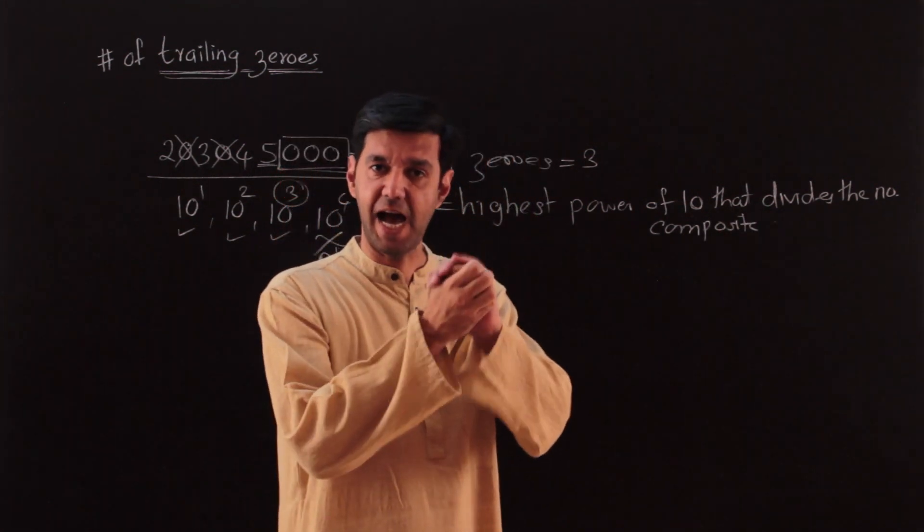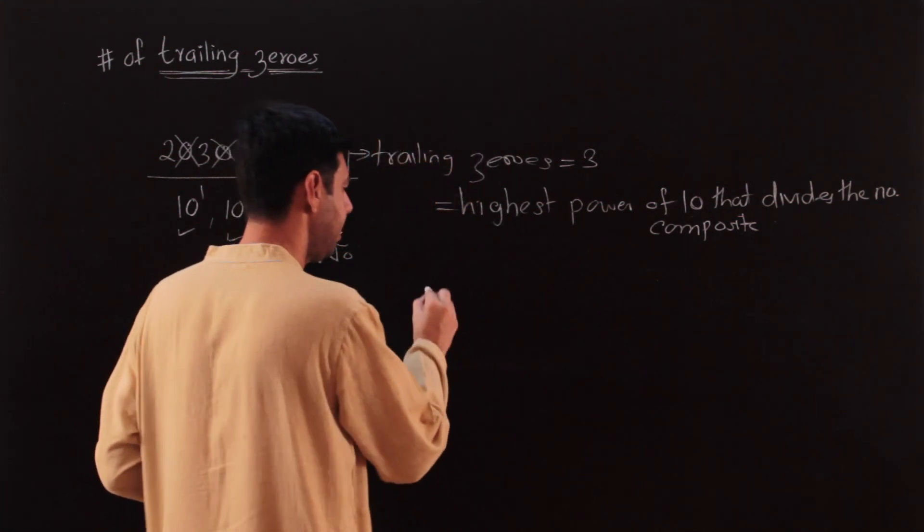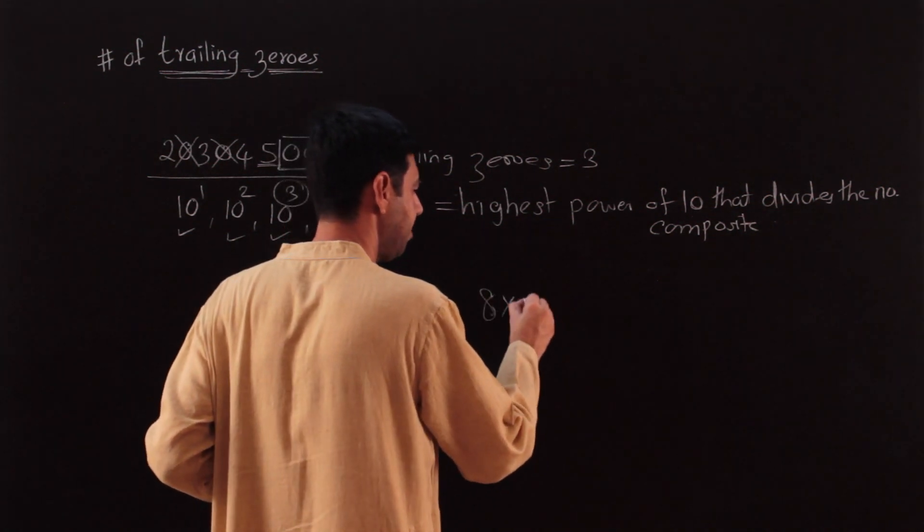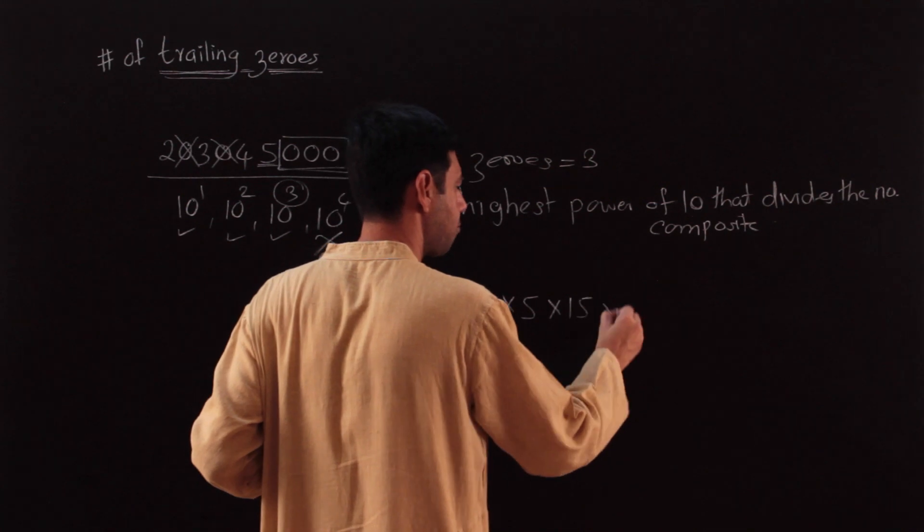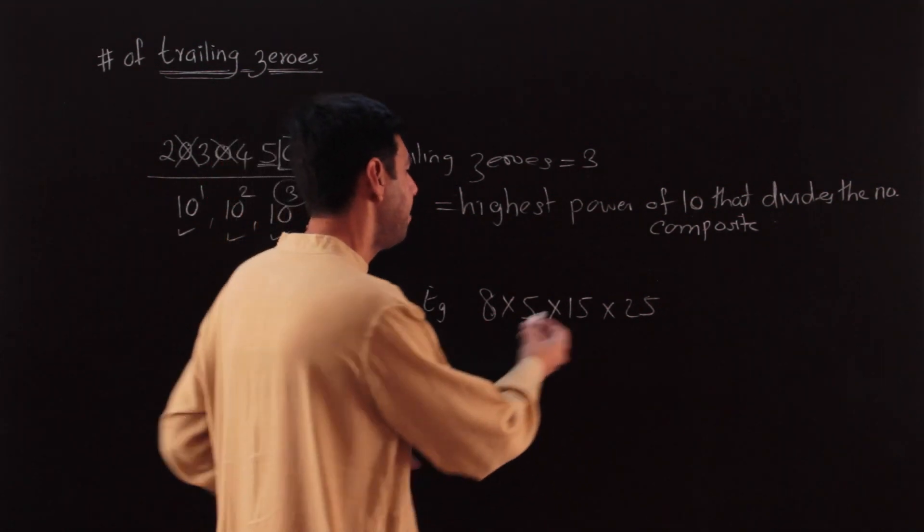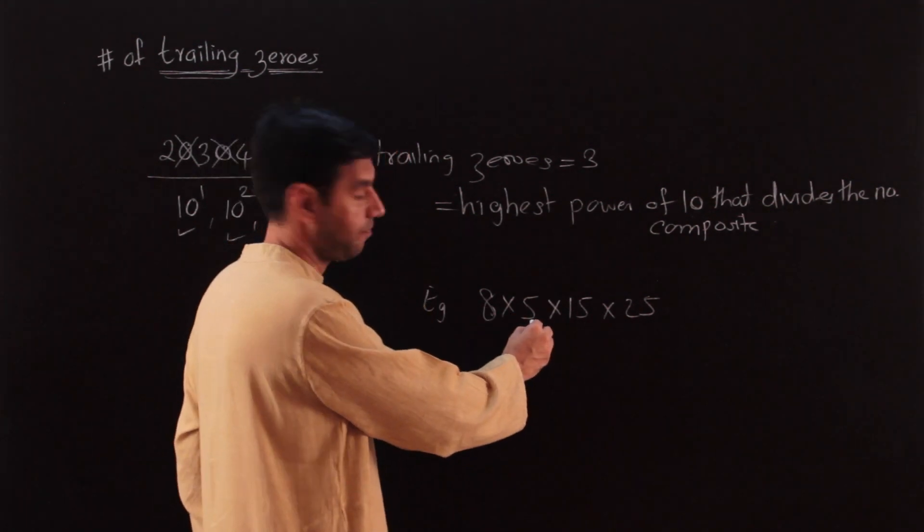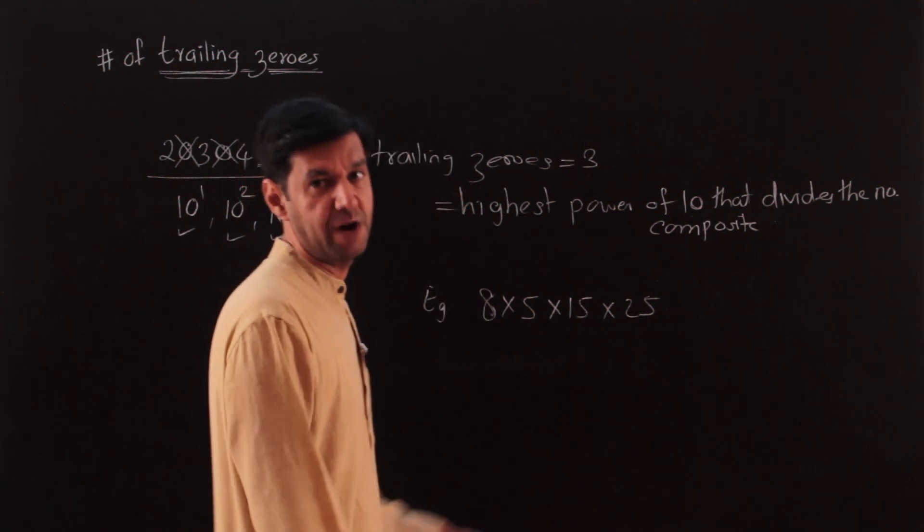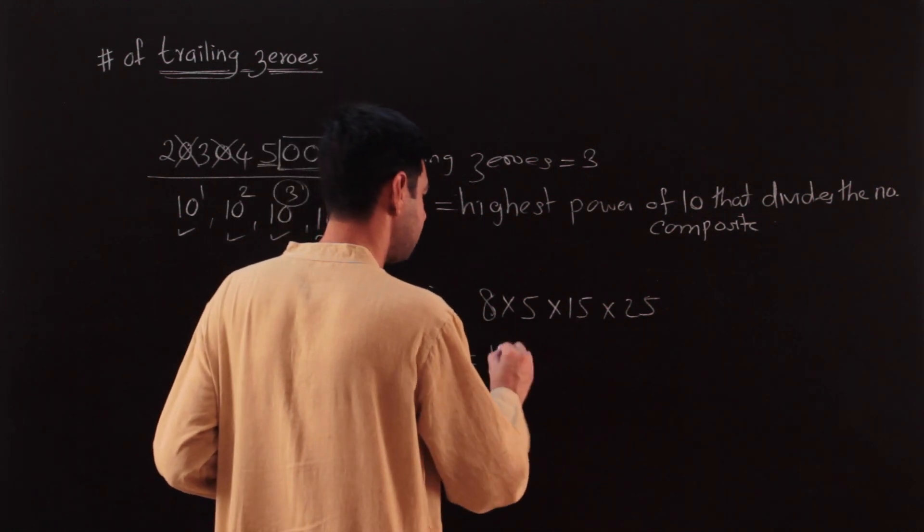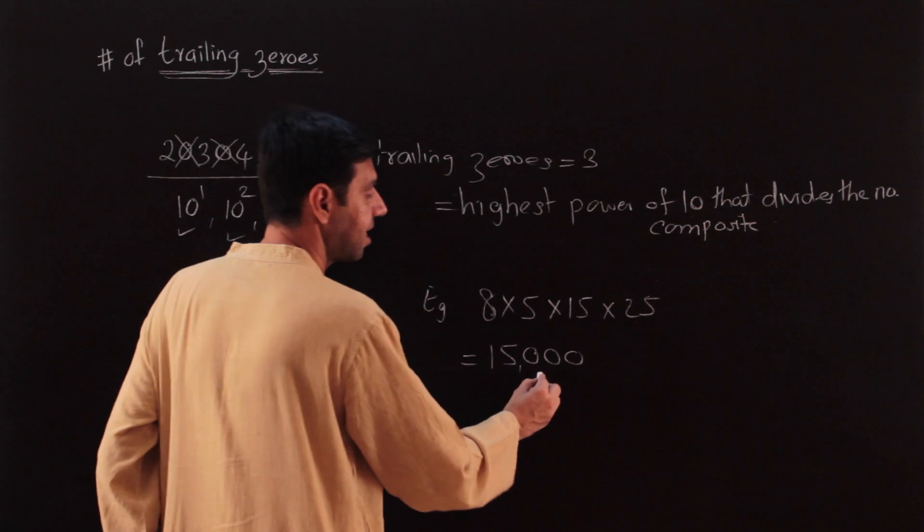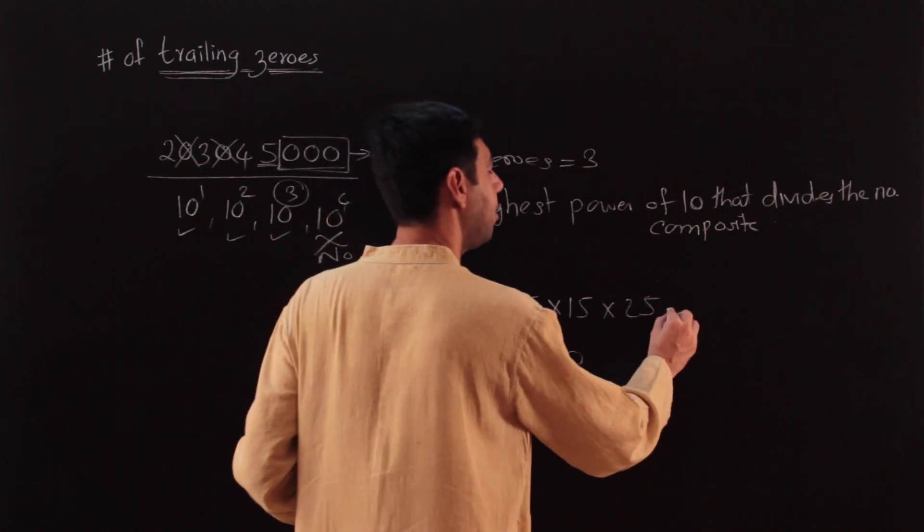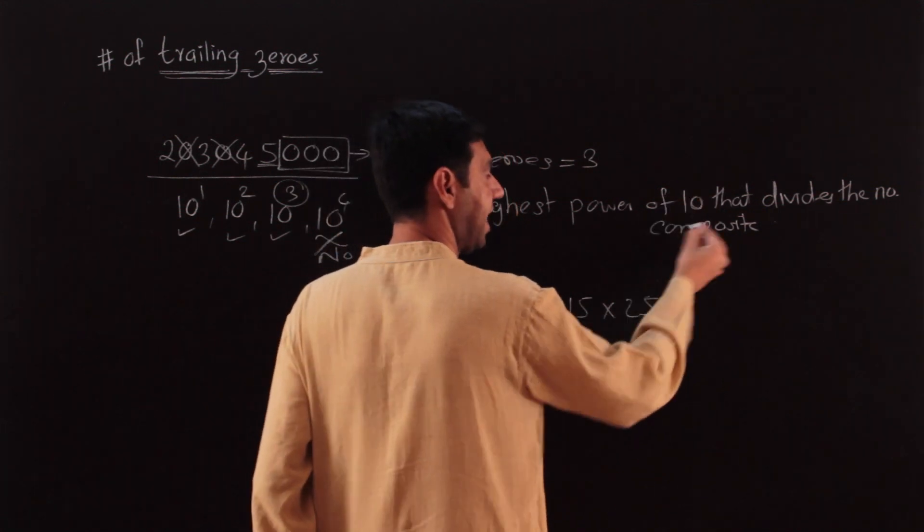For example, we had seen this case of 8 × 5 × 15 × 25. If I look at this product, I can't see any 10 as such. But if I multiply it, 8 × 5 is 40, 40 × 25 is 100, that is going to be 1000, 1000 × 15 is 15,000. Here are those three trailing zeros, whereas at the original level, no trailing zero.